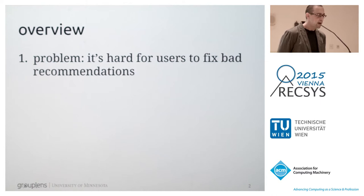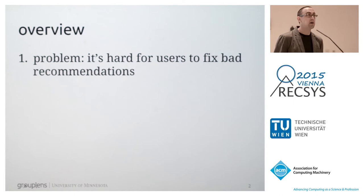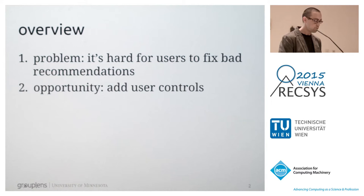In this talk, I'm going to describe three things. First, a problem: if we get bad recommendations from a system, it's hard to know what to do to make them better. Nearly all recommender systems are black boxes where we provide our behavior, we provide lists, we provide liking activity. If we don't know how to act to make things better, then that's a problem I'd like to address.